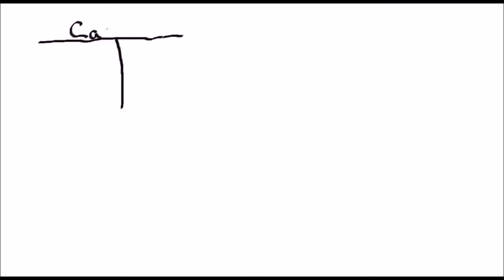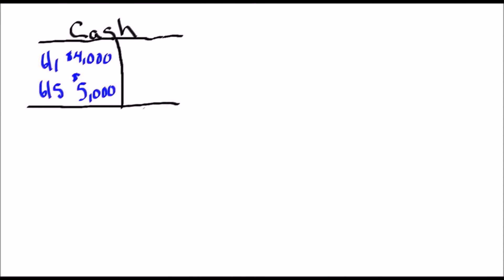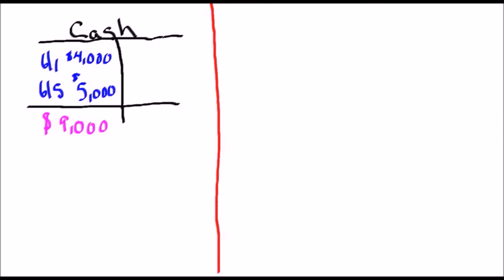Now let's take a look at all the different accounts that we worked on in today's lecture and see if we're able to get everything to balance. The first account was the cash account. Cash is an asset account. On the first we had a $4,000 deposit into cash, and on the fifth we had a $5,000 deposit into cash. So we had $4,000 on the first and $5,000 on the fifth. At the end of June our total for cash is $9,000, so we have $9,000 in assets.